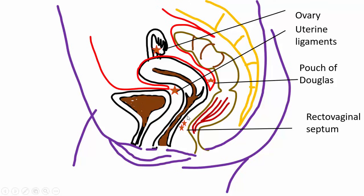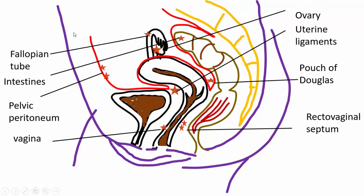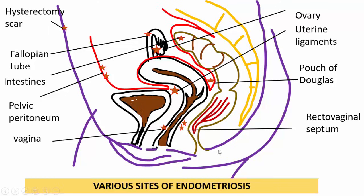Fourthly, it could be in the recto-vaginal septum. It could be on the pelvic peritoneum, in the vagina, in the intestines, and in the fallopian tubes. Last but not least, it could be in the scar on the abdominal wall — it could be a hysterectomy scar or an obstetric condition like a caesarean section scar, which is referred to as scar endometriosis. So these are the various sites of endometriosis.